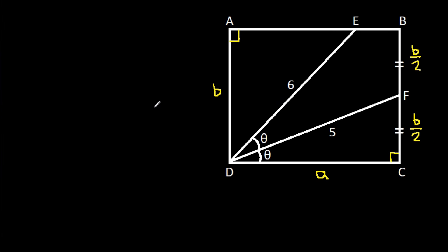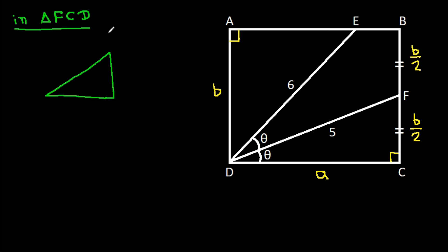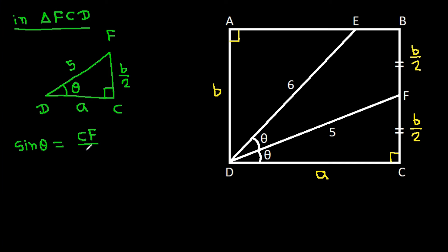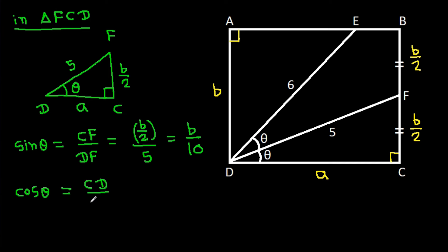In triangle FCD, the angle at D is 90 degrees, the angle at C is theta, DF is 5, CF is B over 2, and CD is A. So sin theta equals CF over DF, which is (B/2) over 5, giving B over 10. And cos theta equals CD over DF, which is A over 5.